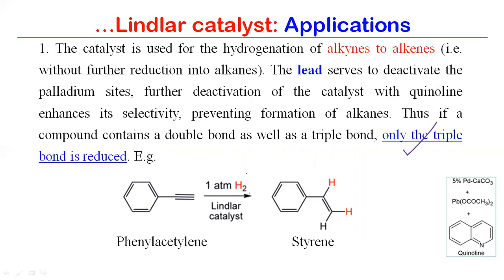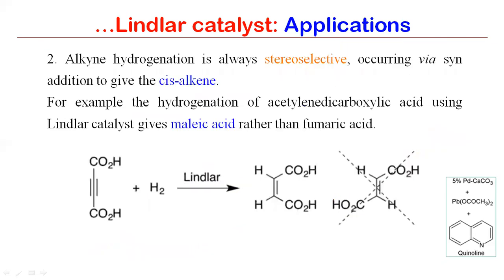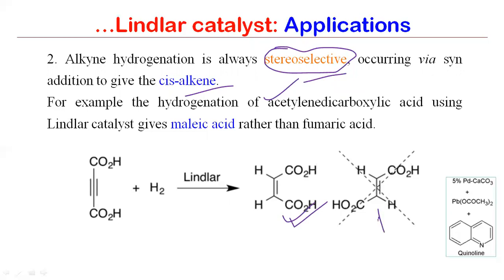Lindlar's catalyst is specifically used for the reduction of a triple bond to a double bond. For example, if we have phenyl acetylene with a triple bond and treat it with Lindlar's catalyst, hydrogen addition takes place in a specific stereochemical fashion. The alkyne hydrogenation is always stereoselective — we get cis-alkene as the major product, though a small amount of trans-alkene also forms as a minor product.